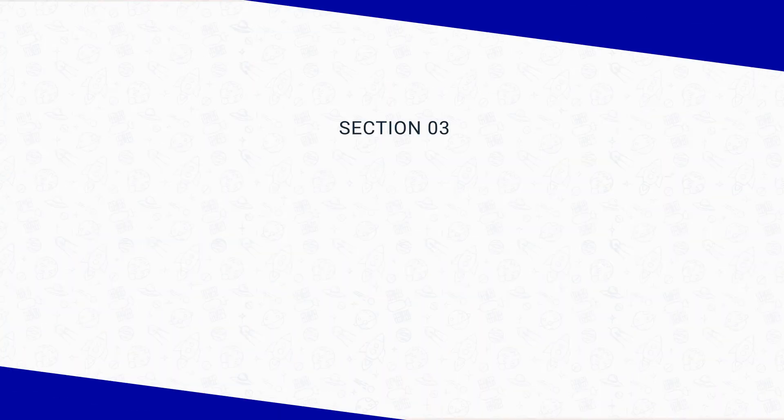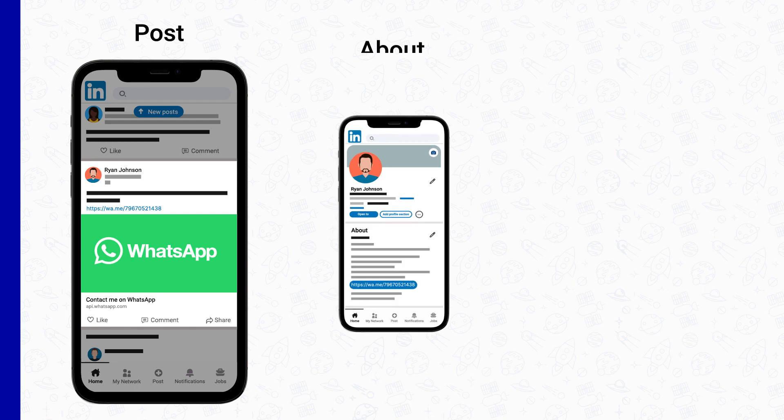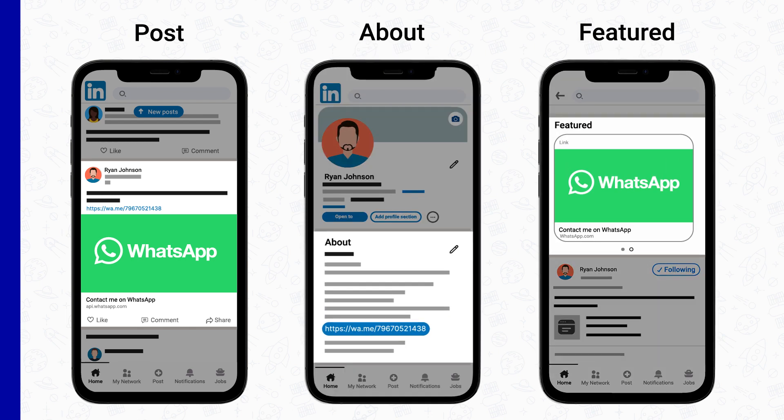You're probably ready to unleash the power of WhatsApp lead capture on LinkedIn, so let's look into how you can actually do that. You can add and share your WhatsApp link on LinkedIn in three places: a post, your LinkedIn About section, and the Featured section.